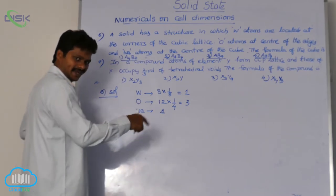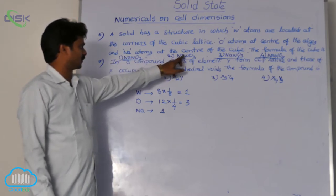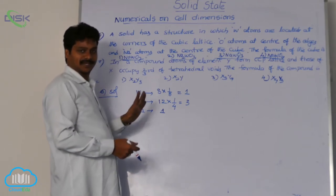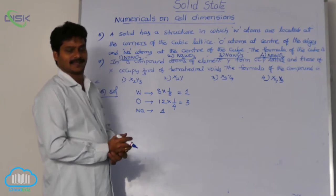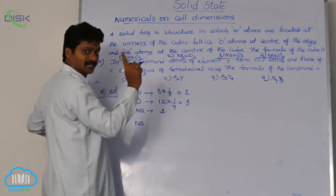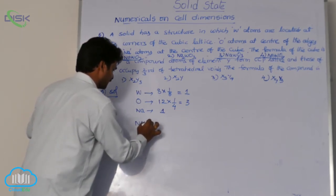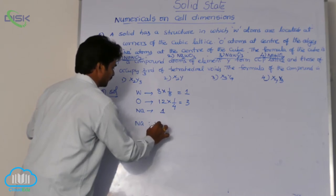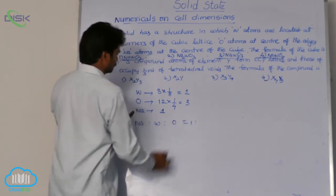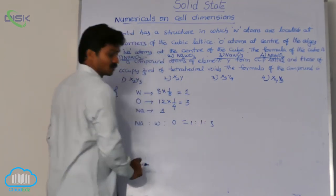Now, let us take the ratio of these atoms. After getting the number of effective atoms per unit cell, how to write the formula? Just take the ratio of those atoms. In each option, first atom sodium, second atom tungsten W, third atom oxygen. Sodium atoms per unit cell 1, tungsten atoms 1, oxygen atoms 3. So their ratio, 1 is to 1 is to 3.